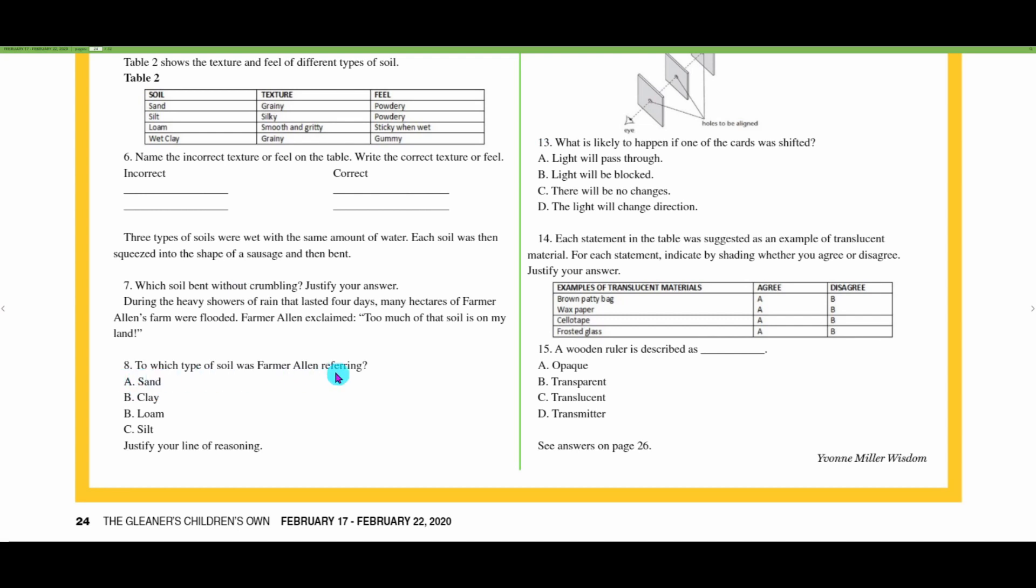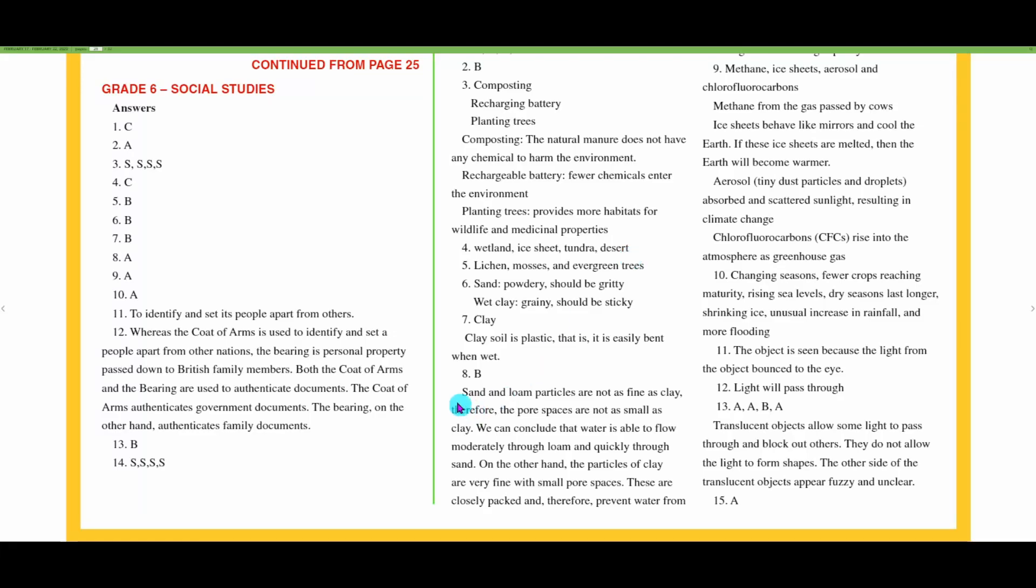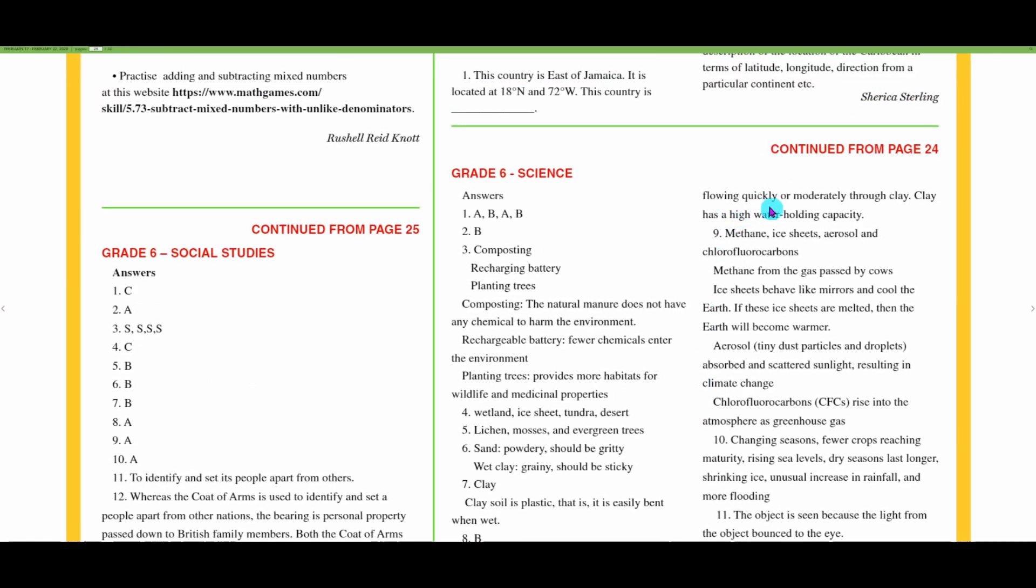Number eight: what type of soil farmer Allen is referring to, B clay. Yes we had that. They say sand and loam particles are not as fine as clay, therefore the pore spaces are not as small as clay. Water is able to flow moderately through loam and quickly through sand. On the other hand, the particles of clay are very fine with small pore spaces, closely packed, and therefore prevent water from flowing quickly or moderately through clay. Clay has a high water holding capacity.